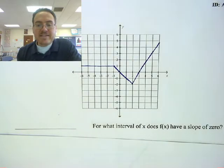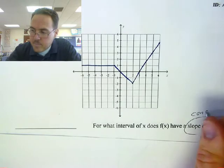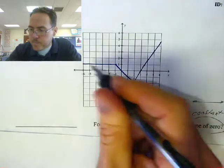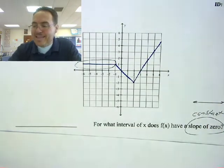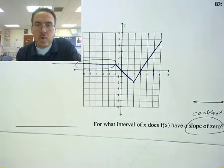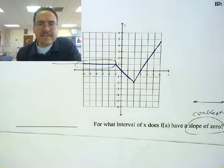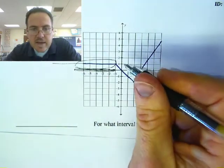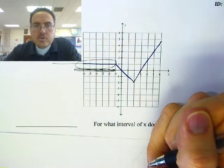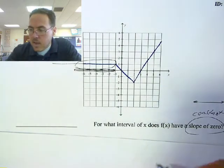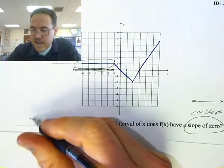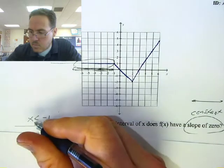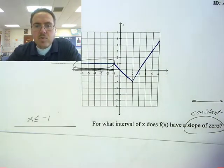For what interval of x does f of x have a slope of zero? Slope of zero — that's constant, that's a flat line. So where is the line flat? Where is it constant? I see it right there. And again, this line goes forever this way — we just don't have enough graph space to show it. So how do we describe that in terms of x? It looks like from negative one backwards, because once you get to negative one on the x-axis, that's when the slope is no longer constant. So f of x has a slope of zero as long as x is less than or equal to negative one.